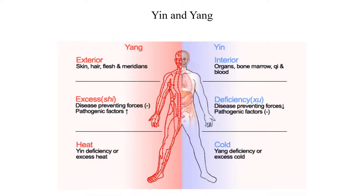Yin and yang oppose one another, yet are interdependent — yin and yang cannot exist without the other. For example, without the structure provided by yin, there would be nowhere for yang to operate. Chi is yang in nature, but it needs an organ such as the spleen to physically act out the commands of the chi.